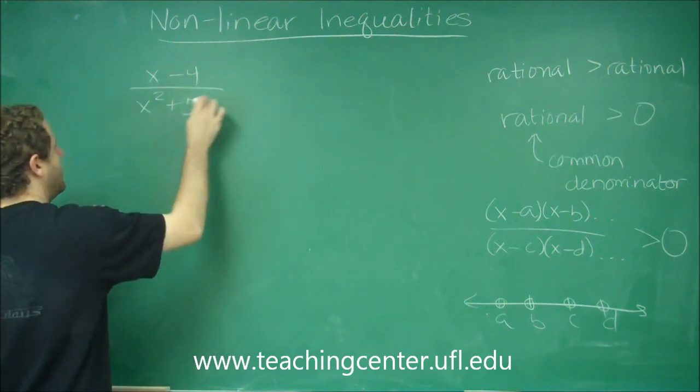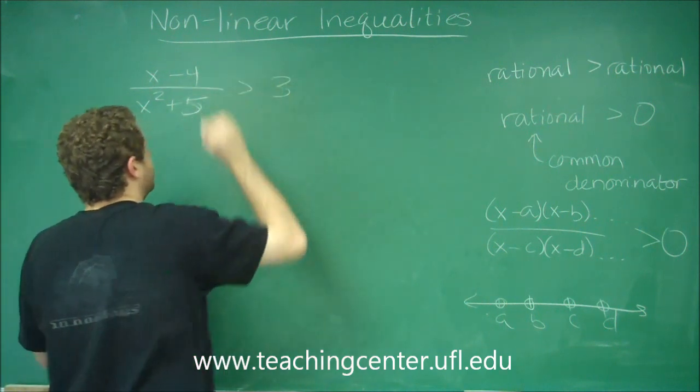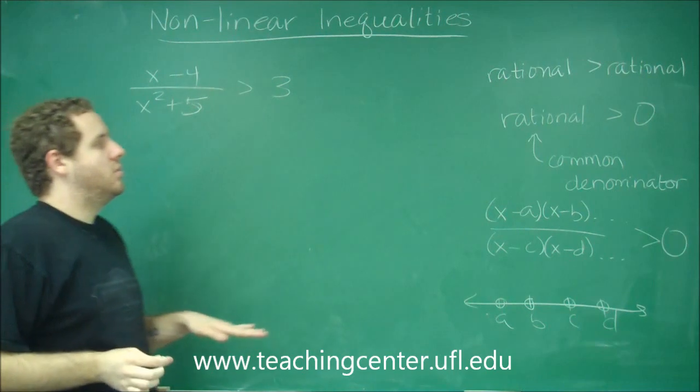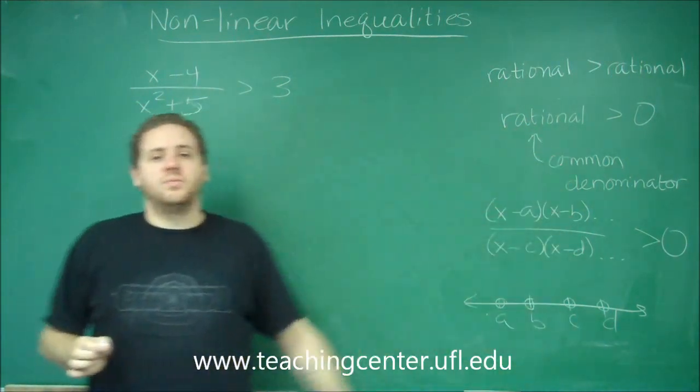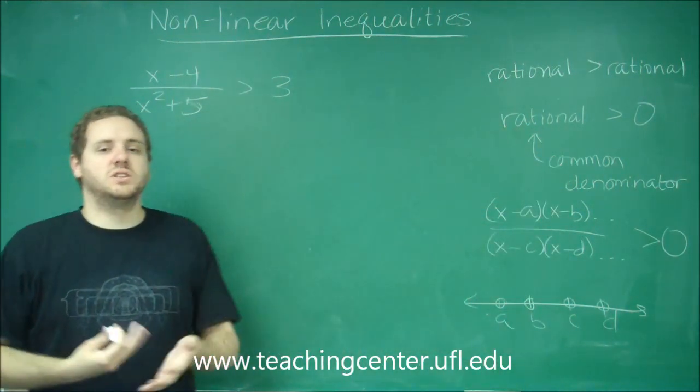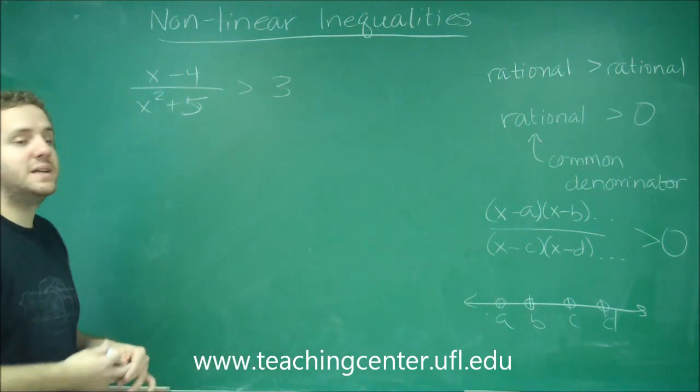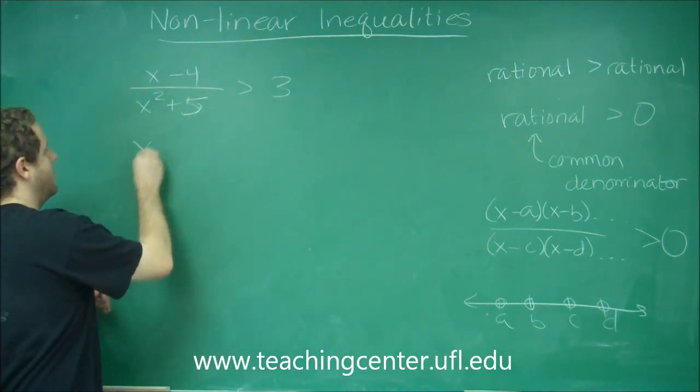x squared plus five. And let's say we said that was greater than three. So, by what we talked about here, three, it is a rational function. It's just a number. But we do need to get it to be zero, so you'd have to subtract three over.